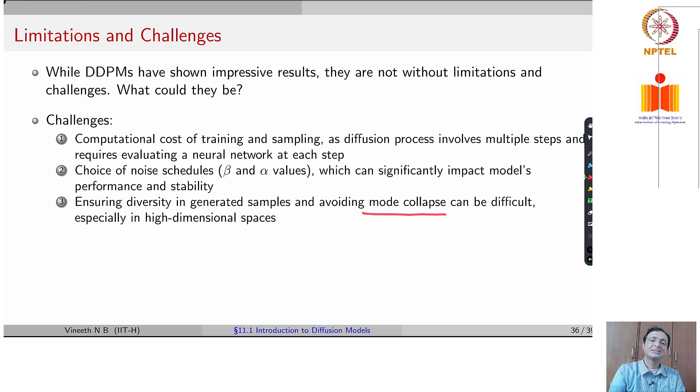What is mode collapse? Remember what we talked about in GANs, where if you have an original data distribution that has multiple modes, you ideally want your model, your diffusion model or any other generative model to be able to generate samples that come from any of these modes. However, some of these generative models have this limitation of collapsing to a particular mode and only generating images or data samples in general that correspond to that particular mode, which is a limitation.